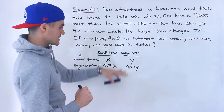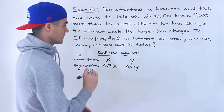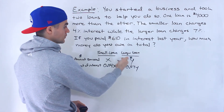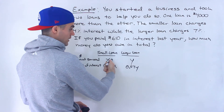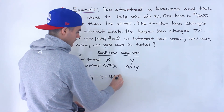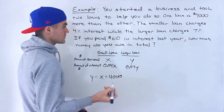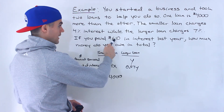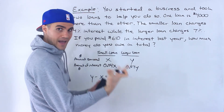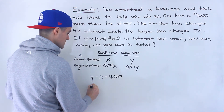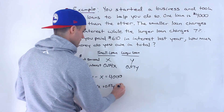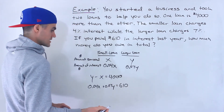Now with these expressions, we can create equations from the information. One loan is $4,000 more than the other, meaning the larger loan is $4,000 greater, so Y minus X equals 4,000. And we're told the amount of interest paid was $610, meaning this plus this has to equal 610. So 0.04X plus 0.07Y equals 610.